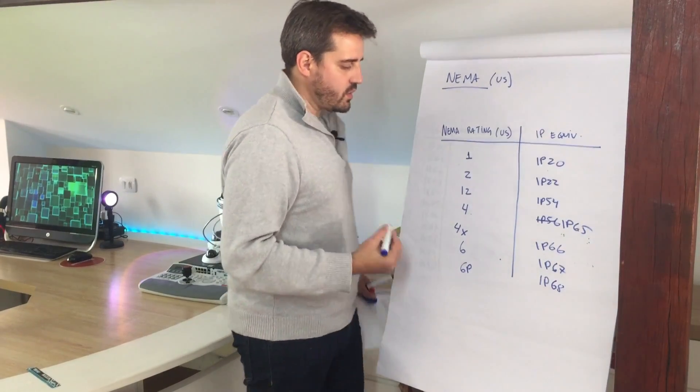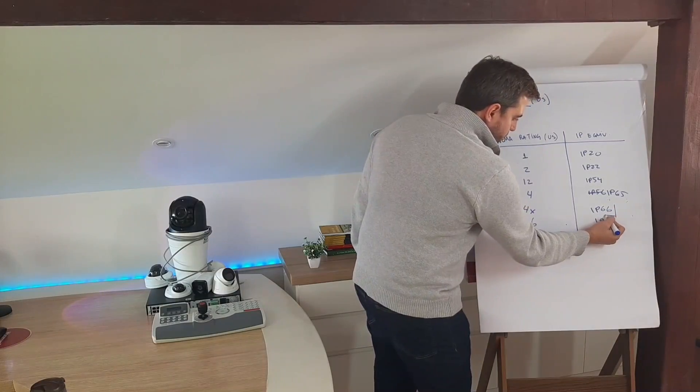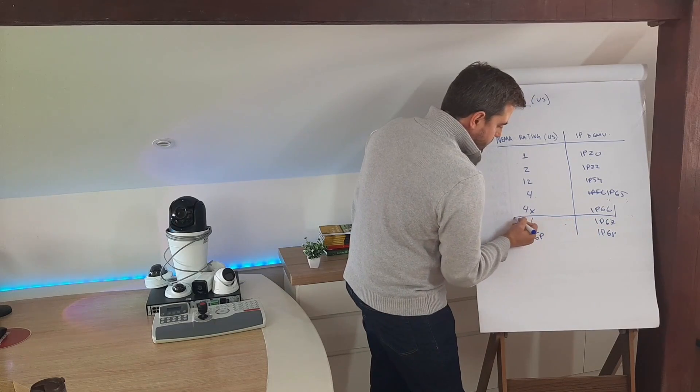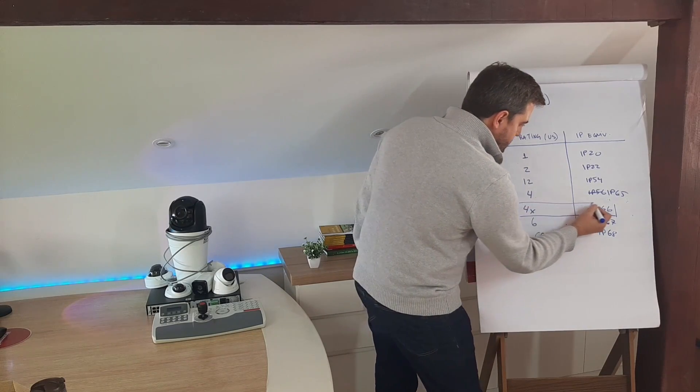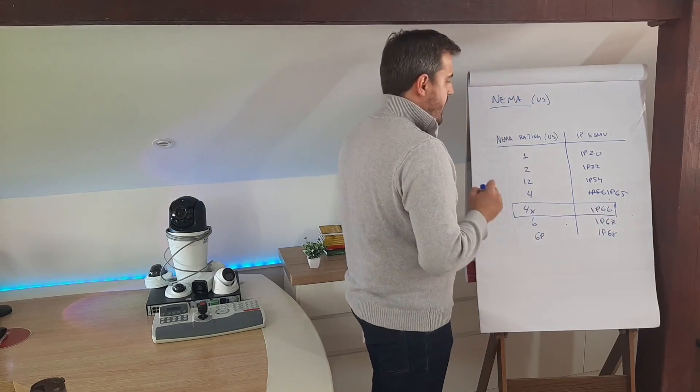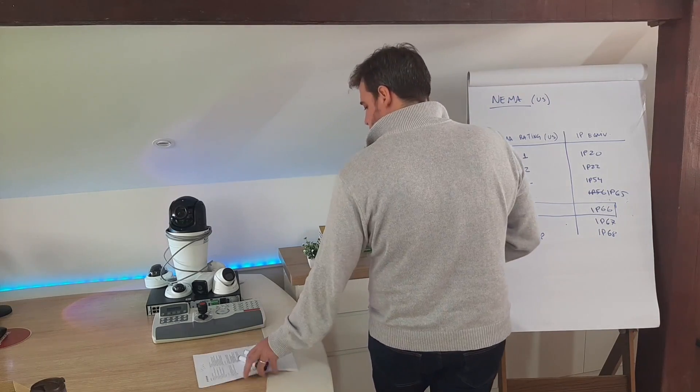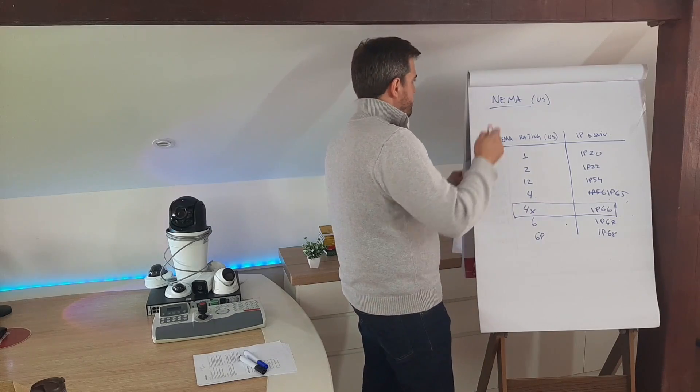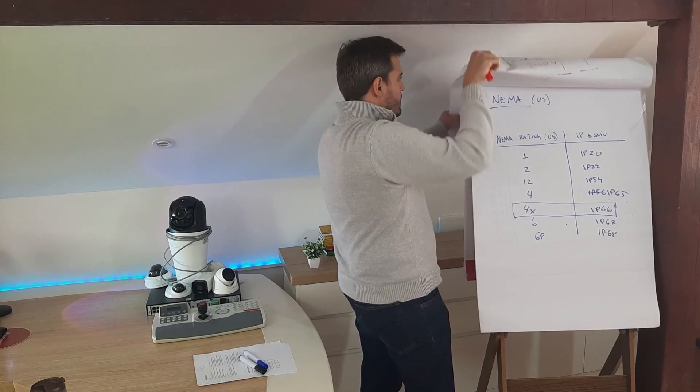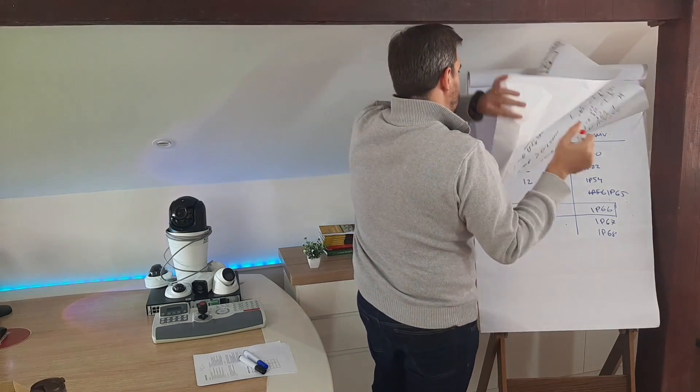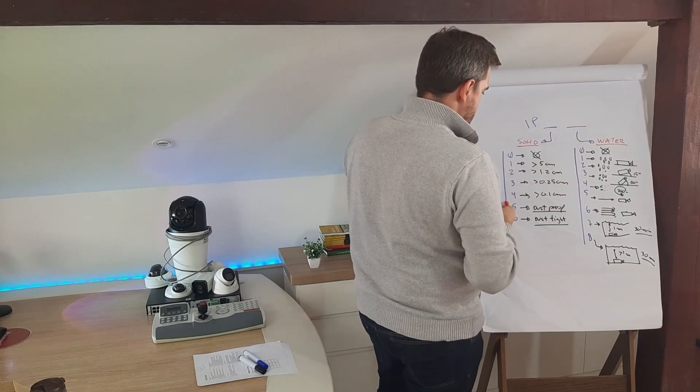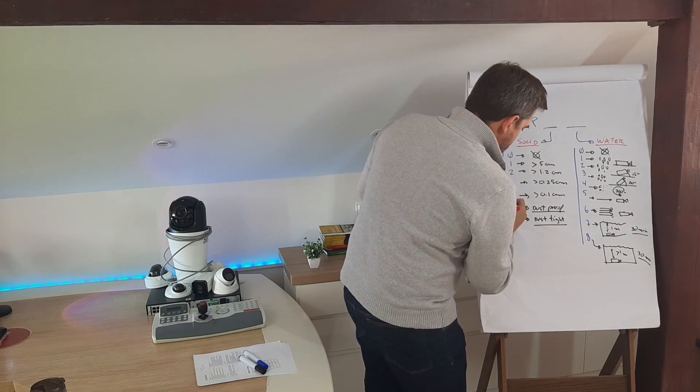You know, the most common classification for cameras that you see that is outdoor cameras is IP66 and 4X. One thing that I forgot about IP is the classification that we have for cameras.